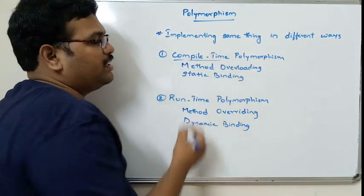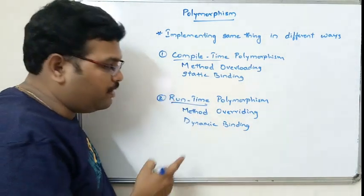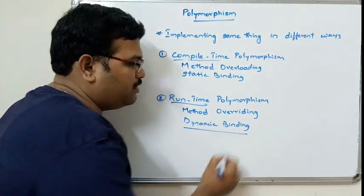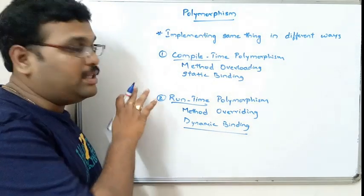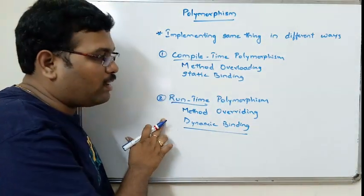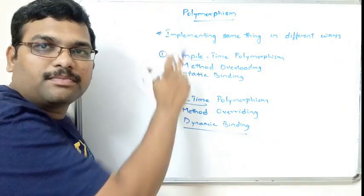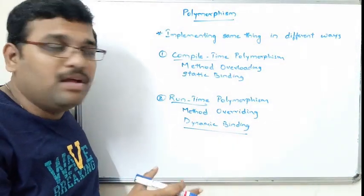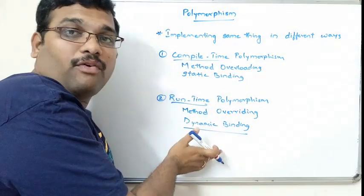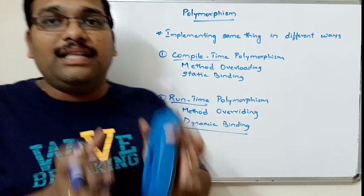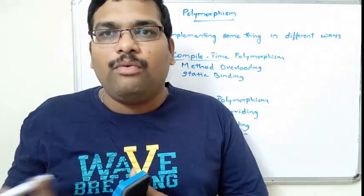It is called static binding because it happens at compile time, and dynamic binding because it happens at runtime. Both method overloading and method overriding come under the concept of polymorphism. In order to achieve polymorphism we have to implement these two concepts. Now let us see the actual differences between overloading and overriding.